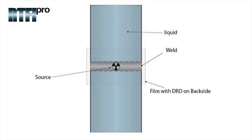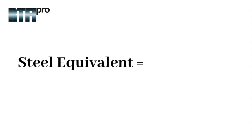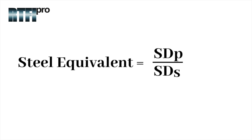What we are providing here is the mathematical application to show the equivalent of steel, in order to possibly save time in cases of reshoots due to light density film. Steel equivalent is equal to the specific density of the product divided by the specific density of steel, multiplied by the internal diameter of the pipe.